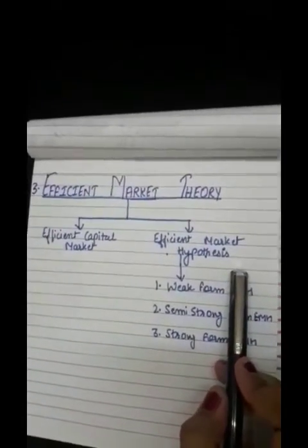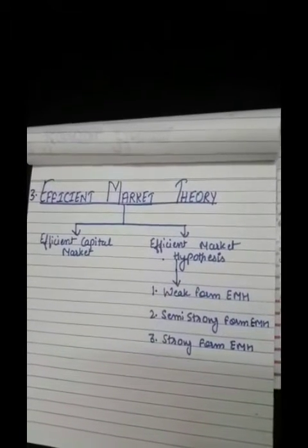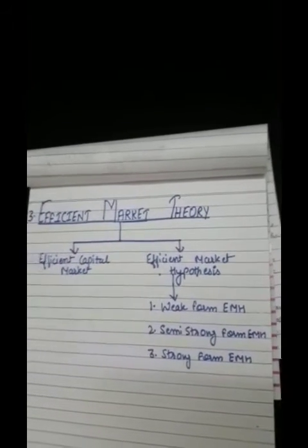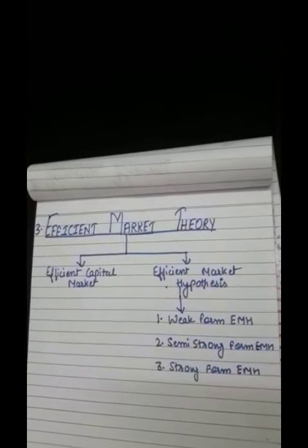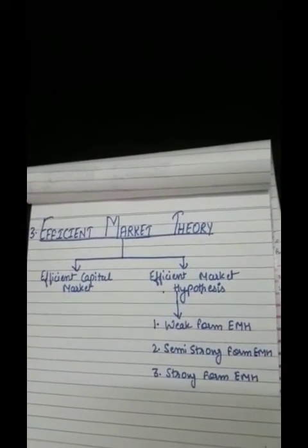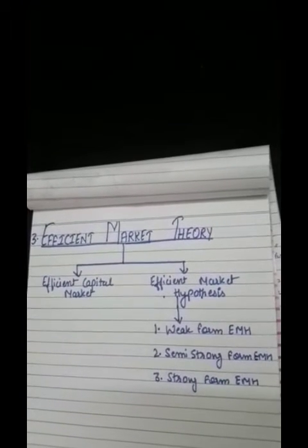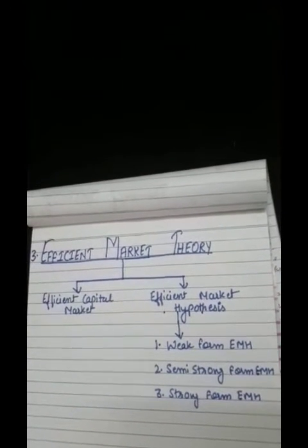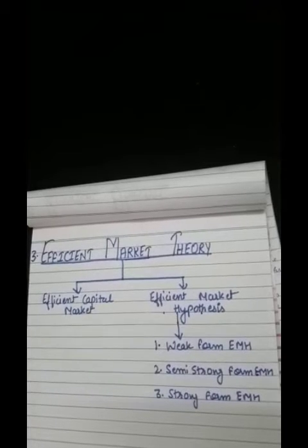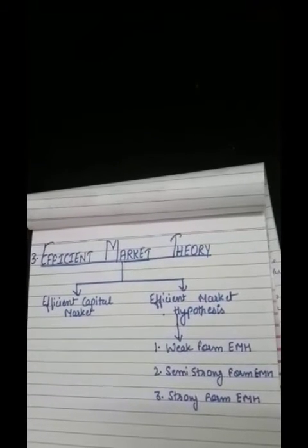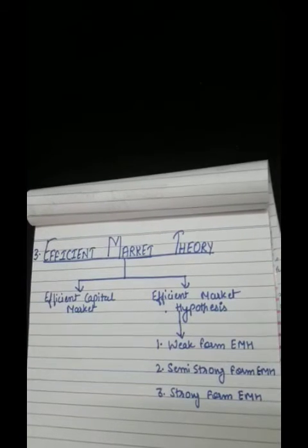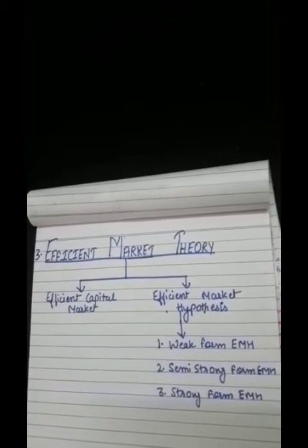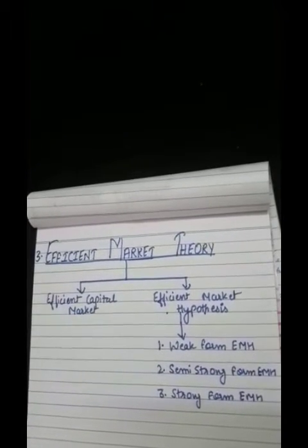The third approach is efficient market theory. An efficient capital market is one in which security prices adjust rapidly to the arrival of new information, and therefore the current prices of securities reflect all available information. This is based on assumptions: first, a large number of profit-maximizing participants analyze and value each security independently; second, new information comes to the market in a random fashion; and third, profit-maximizing investors adjust security prices rapidly to reflect new information.